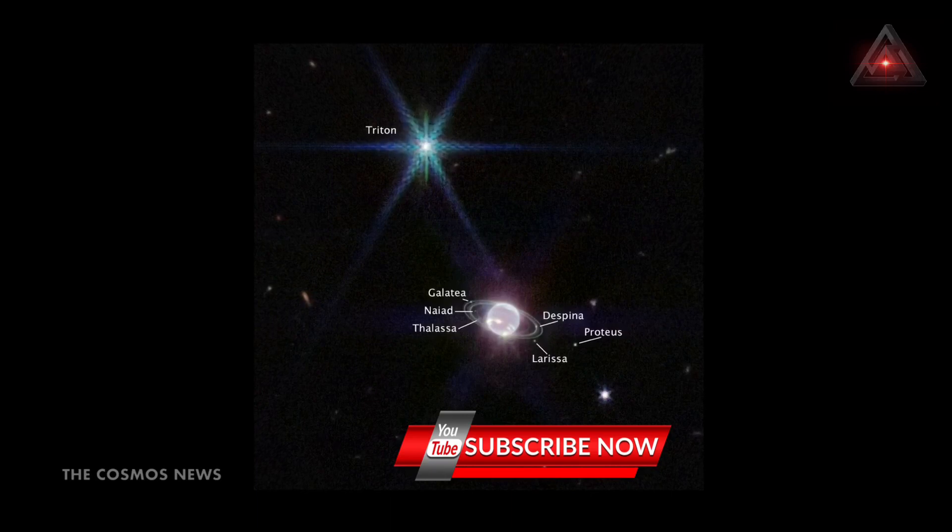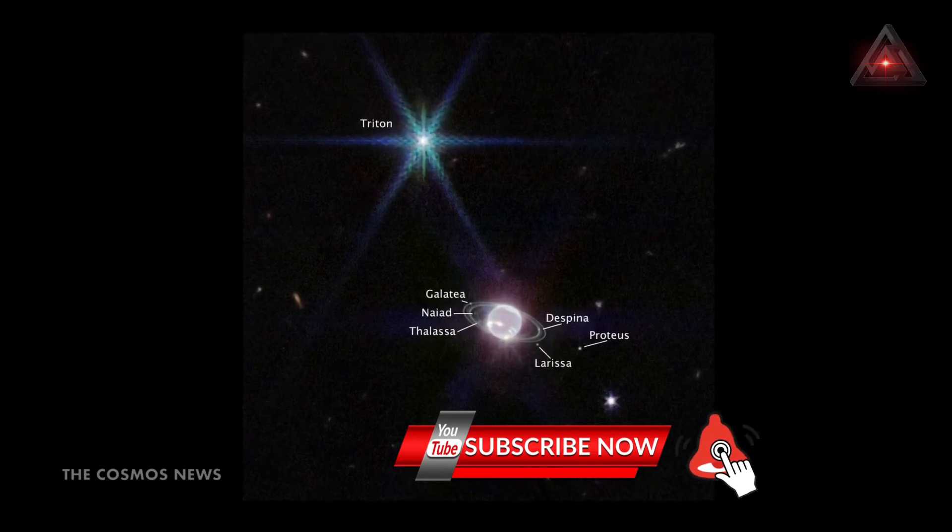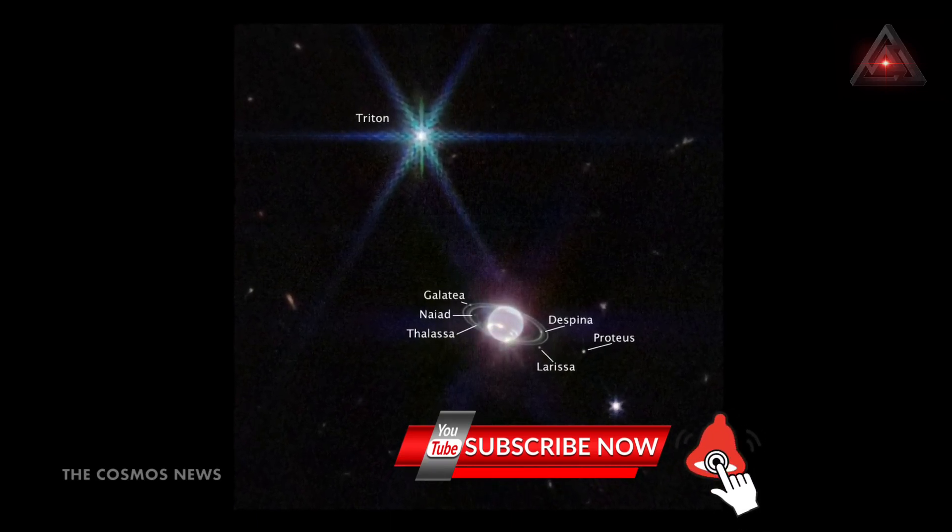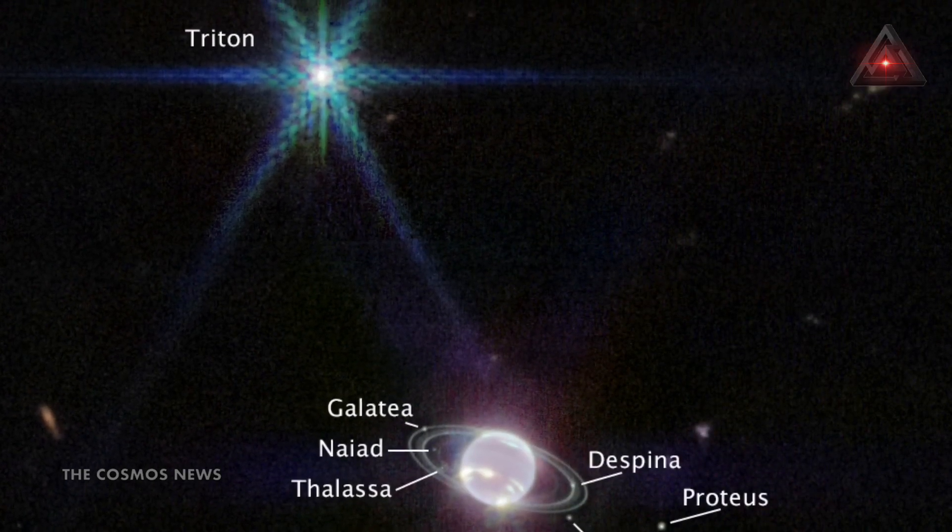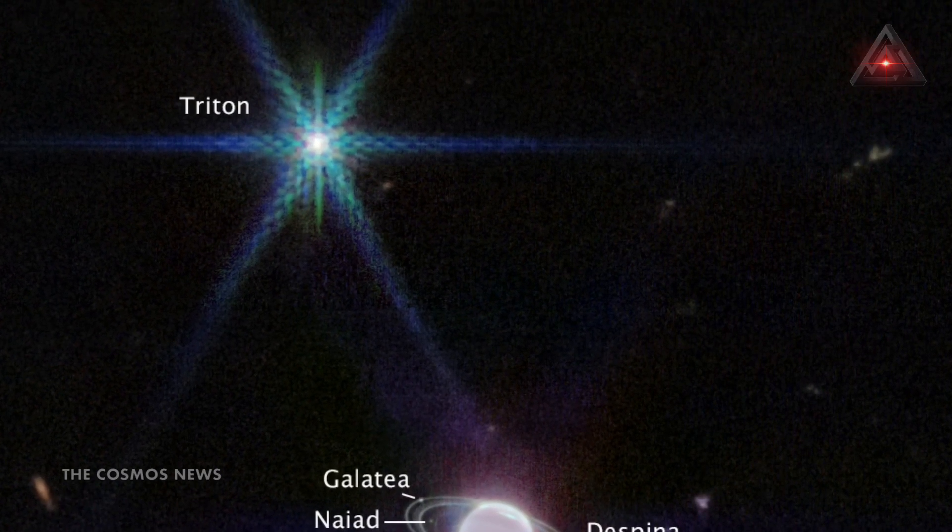Dominating this Webb portrait of Neptune is a very bright point of light sporting the signature diffraction spike seen in many of Webb's images. But this is not a star; rather, this is Neptune's large and unusual moon, Triton.